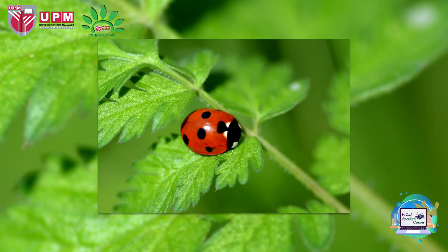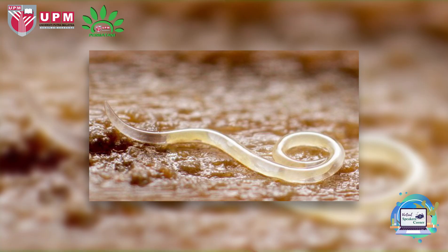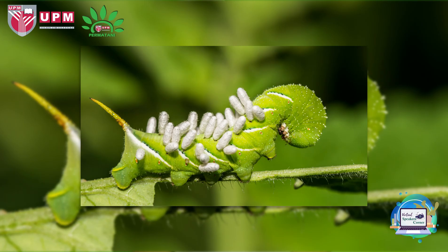Here are some examples of biological pest control. Ladybugs are used to control aphids and other small insects that damage crops. Nematodes are tiny worm-like organisms that are used to control soil-borne pests like grubs and root maggots. Parasitoids are insects that lay their eggs inside the body of another insect, which then hatches and feeds on the host insect, killing it.